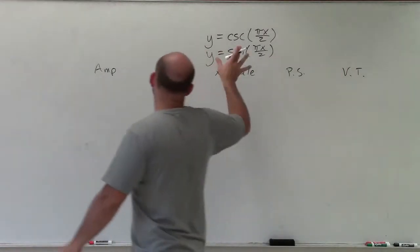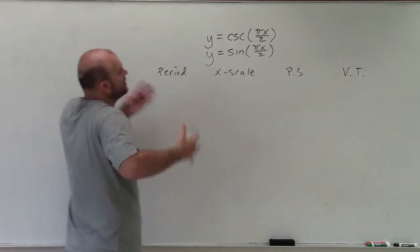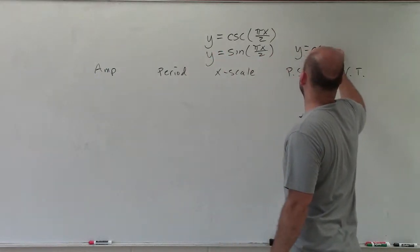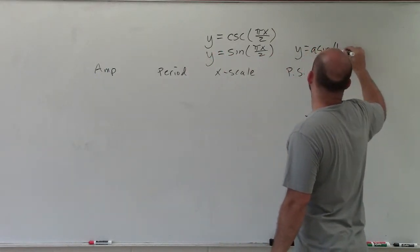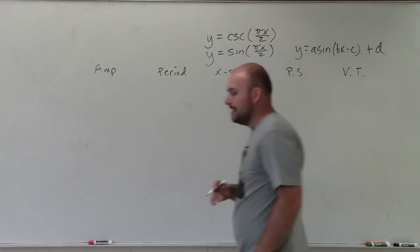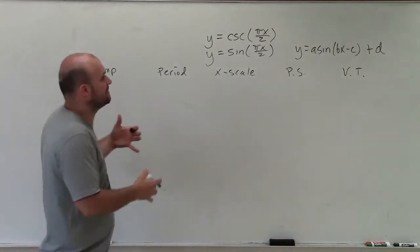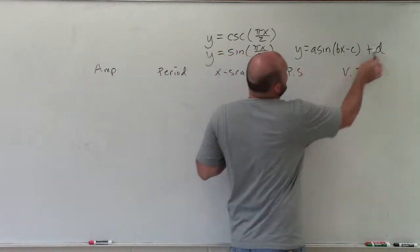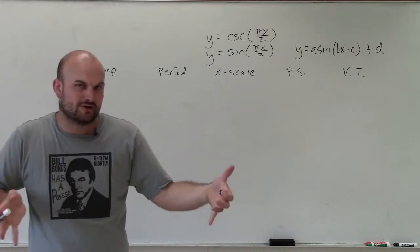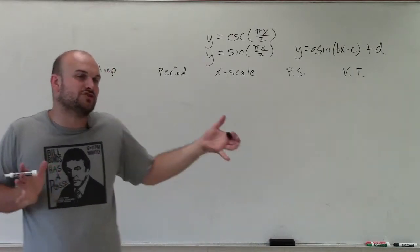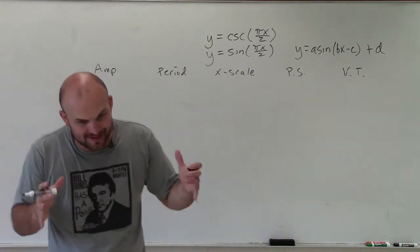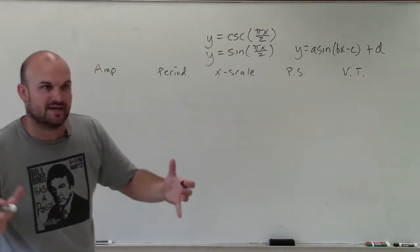To understand all of this, we need to know our general form, and it doesn't matter if it's sine or cosecant. Our general form is y equals a times sine of bx minus c plus d. These values are what's going to affect our graph and transform it from the general parent graph. You have to know the parent graph — I've covered it in other videos, and you need to know what just sine of x looks like or what just cosecant of x looks like.